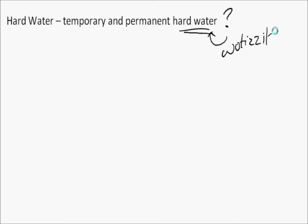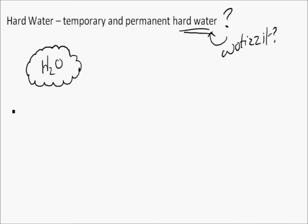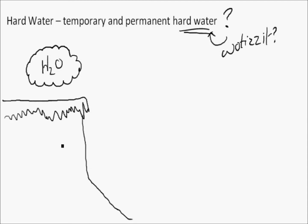Hard water - what is it? Is it good? Is it bad? How is it made? And how do you fix it? How do you get rid of it once you've got it? The way it's made is fairly simple. It's made by the chemical reaction of a rock containing calcium or magnesium ions and acid rain.